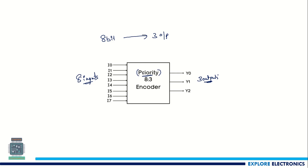We are calling it a priority encoder because the encoding method is different from a normal 8-to-3 encoder. Here we need to assign priority among the 8 inputs. The highest priority is assigned to the MSB, which is i7. The next priority is for i6, and similarly the lowest priority is for i0. If there is an input at the highest priority, irrespective of the lower priority inputs, the output will be encoded to 111. Let's look at the truth table to understand this in a better way.